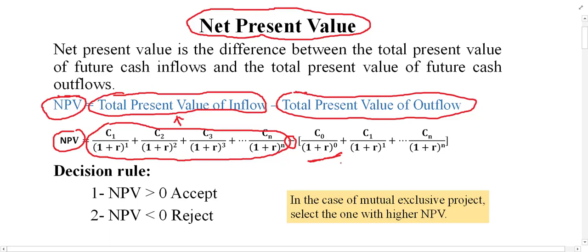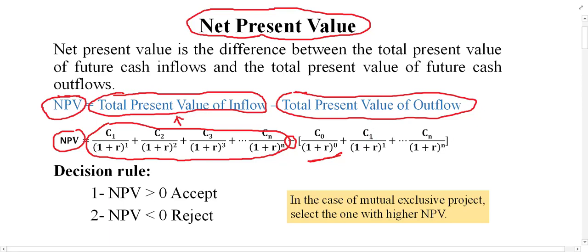If you made some additional investment in the project at the end of year one, you discount it for one year. If made at the end of year two, you discount it for two years, and so on. Remember, the initial investment does not require discounting. This formula gives the total present value of outflow. Then, total present value of inflow minus total present value of outflow gives the NPV result, which is either positive or negative.